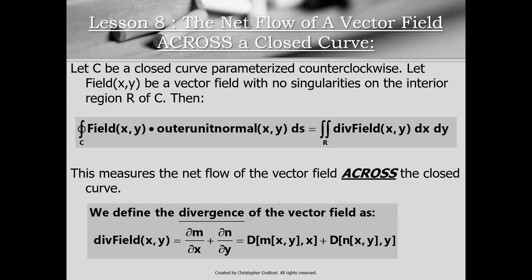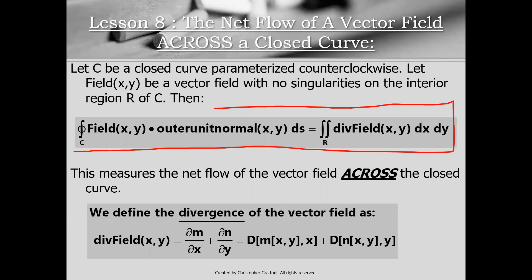In lesson 8, we learned how to compute the net flow of a vector field across a closed curve, and we had two ways of running that calculation as a consequence of the Gauss-Green theorem. We could either do a path integral along the boundary of our curve, or a double integral over the interior region of our curve.